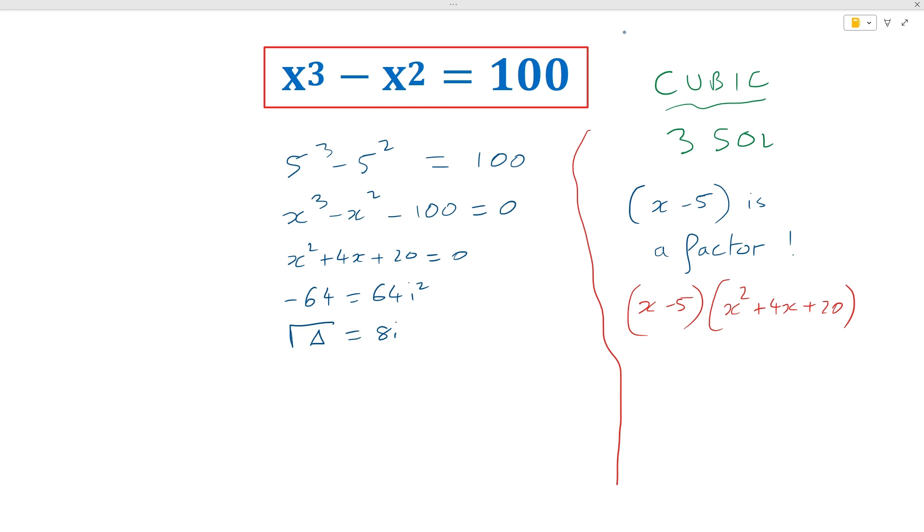So using the value square root of delta equals 8i, we can use the quadratic formula and we can say that our solutions are going to be minus b plus or minus the square root of delta over 2a. And in this case we're going to use minus b as 4, so negative 4.